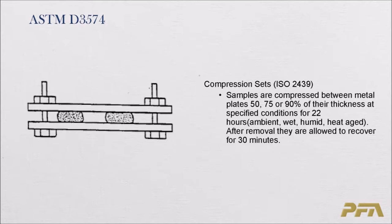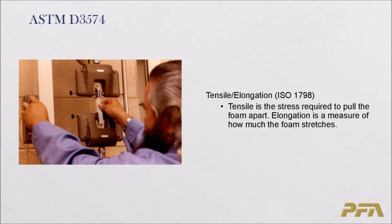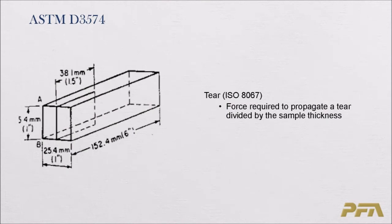After removal, samples are allowed to recover for 30 minutes and the thickness loss is calculated. Next is tensile and elongation: tensile is the stress required to pull the foam apart, and elongation is a measure of how much the foam stretches. Using the same electromechanical universal testing machine with two grippers, the sample is pulled apart at a certain rate. The tear test measures the force required to propagate a tear divided by the sample thickness — you put a cut about one and a half inches into one end of the sample and the device measures the force to propagate that tear.